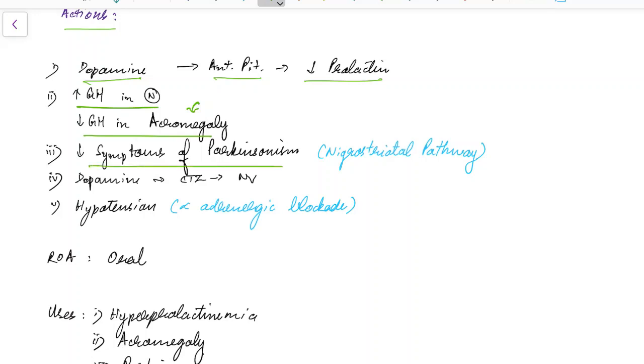Bromocryptin decreases symptoms of parkinsonism. Remember, parkinsonism is due to deficiency of dopamine in the nigrostriatal pathway. Since Bromocryptin is a dopamine agonist, it reduces the symptoms of parkinsonism.